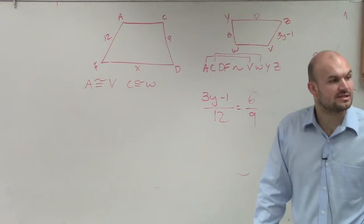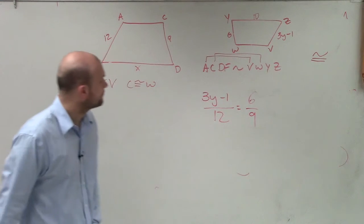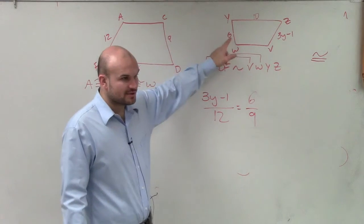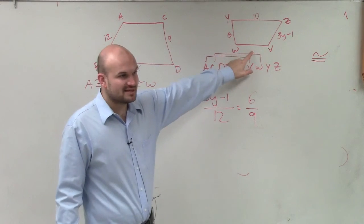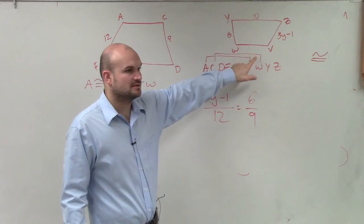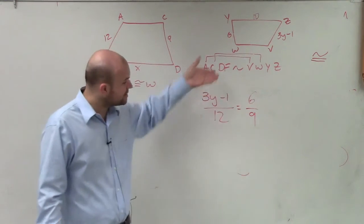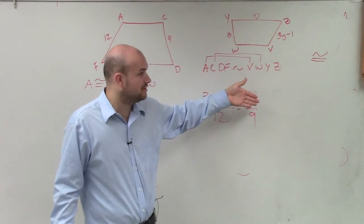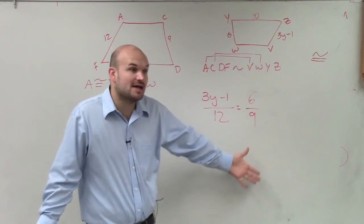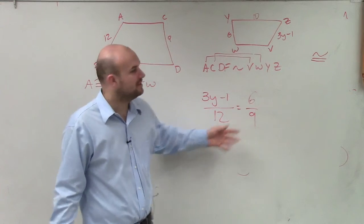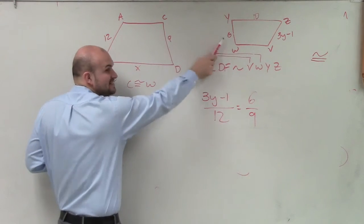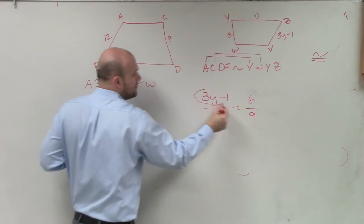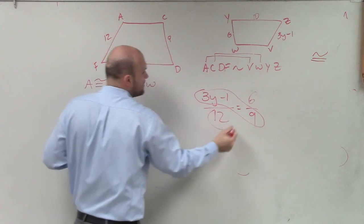Does everybody understand? Yes, Asha? Why would you pick YW is 6? Because I know what YW is, 6, right? I wouldn't want to pick this one because I don't even know what that length is, right? So you want to pick, when you're setting up a proportion and you have one missing value, you want to set it equal to another proportion that you know the value of, right, for the top and bottom. So since I know the value of both of these sides, it's now able, now I'm able to solve.